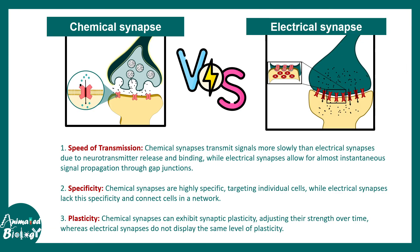To give a quick overview of the key differences: we looked at speed of transmission, then specificity, and lastly plasticity. These are the key principles that differentiate between chemical and electrical synapses.